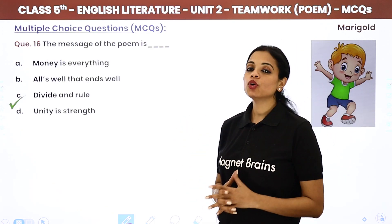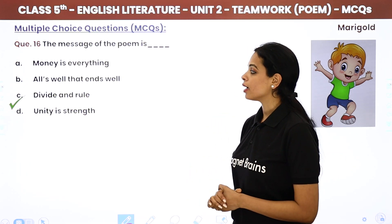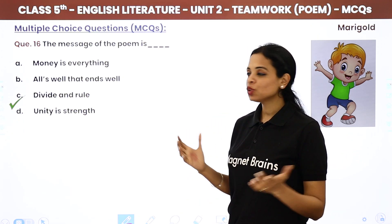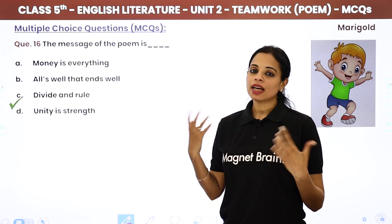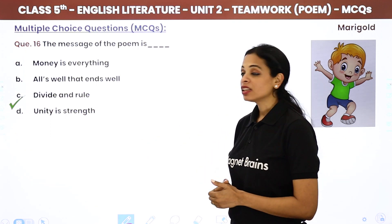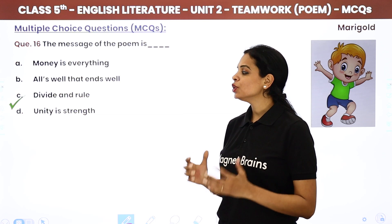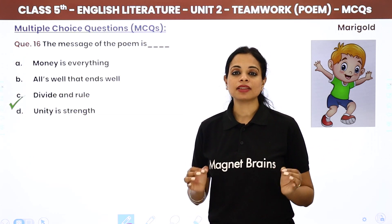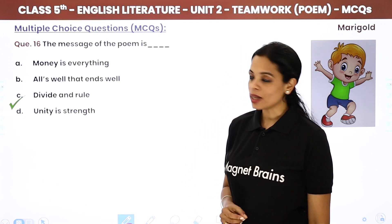The message of the poem is...? Options are money is everything, all's well that ends well, divide and rule, or unity is strength. The answer is unity is strength — ekta mein taakat hai.